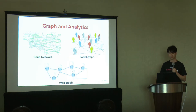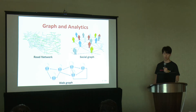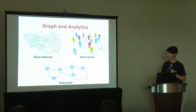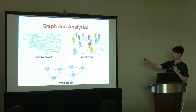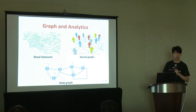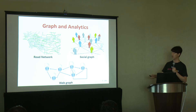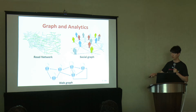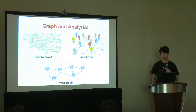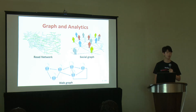As you all know, graph is an effective way to represent entities and their relationships. Examples include road networks, social graphs, and web graphs. Using various analytics, valuable information can be extracted, such as shortest paths, communities, and ranks of pages. I'll explain two motivations in designing our system.